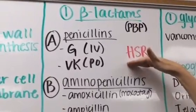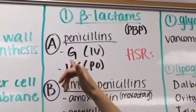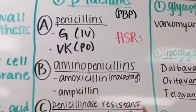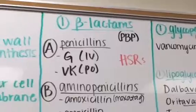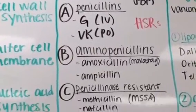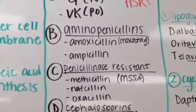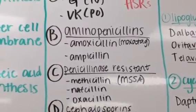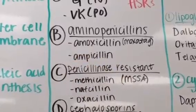We have our regular penicillins — how I remember these is G and IV, it kind of rhymes, G-I-V — and then penicillin VK, which I think of as oral because of the sound it makes. Then we have our aminopenicillins, which are amoxicillin (Moxitag) and ampicillin. Because they're aminopenicillins, they both start with 'A' — that's how I remember that.